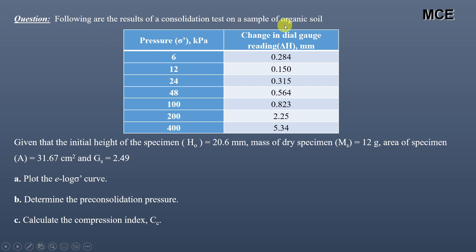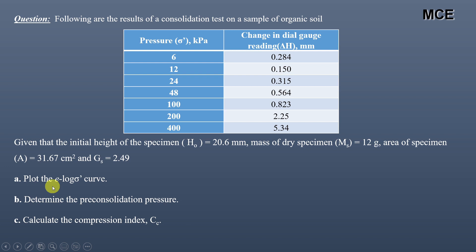The pressure values are in the first column and the change in dial gauge readings are in the second column. Given that the initial height of the specimen is 20.6 mm, mass of dry specimen is 12 grams, area of specimen is 31.67 cm squared, and specific gravity of solids is 2.49. We have to plot the e-log sigma prime curve, which is the compression curve, determine the pre-consolidation pressure, and the compression index.